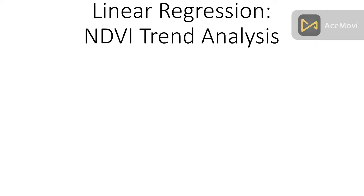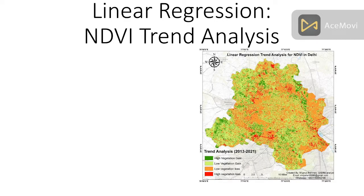Here you can see this is one kind of map for the linear regression trend analysis for NDVI in Dili. We are identifying the trend analysis between the year 2013 to 2021. Between this time period we classify: high vegetation gain, low vegetation gain, low vegetation loss, and high vegetation loss. We show the result in this type of color — green identifies high vegetation gain, and red identifies high vegetation loss between the year 2013 to 2021.